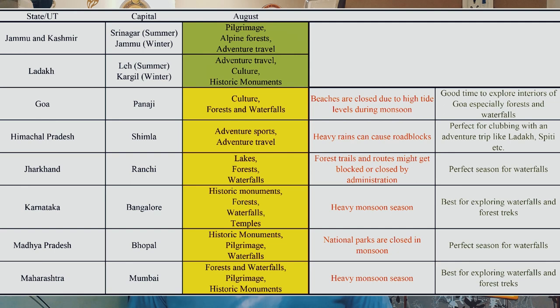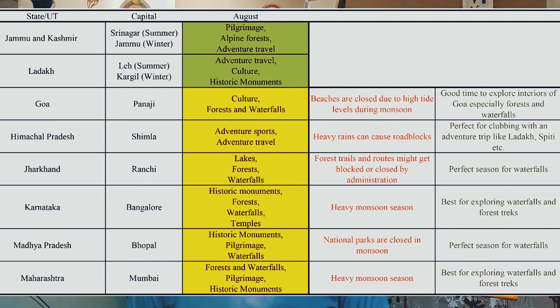As we go deeper into monsoon in August and September, the list grows and more places from central India come back into picture. For August, the yellow list includes: Goa, Jharkhand, Karnataka, Maharashtra — still there for forests and waterfalls — Madhya Pradesh back in the list, Himachal Pradesh still in yellow, and Jammu & Kashmir and Ladakh still in green. If you want to visit lush green forests, waterfalls, streams, and rivers while enjoying rains, August in these places is the time.